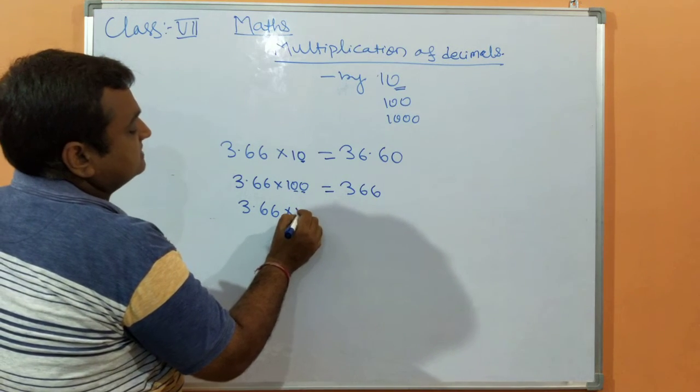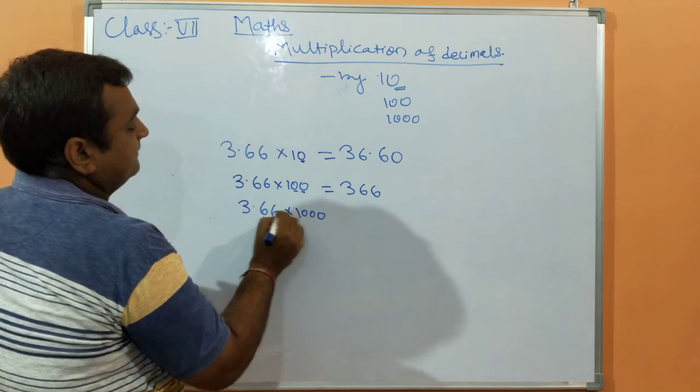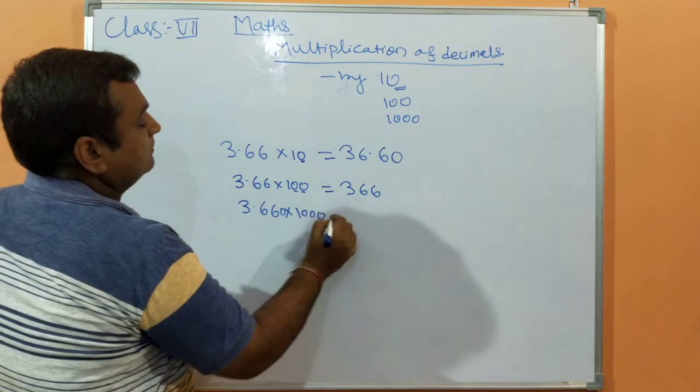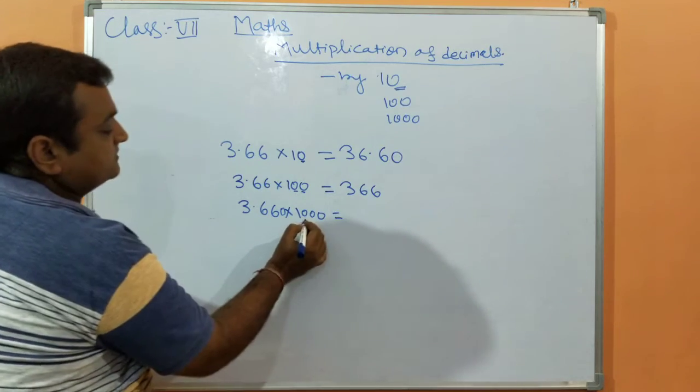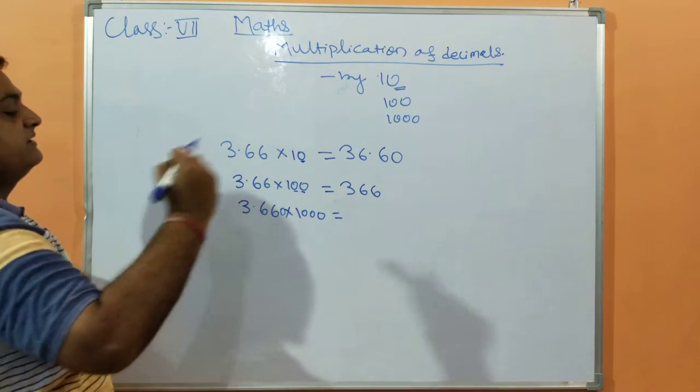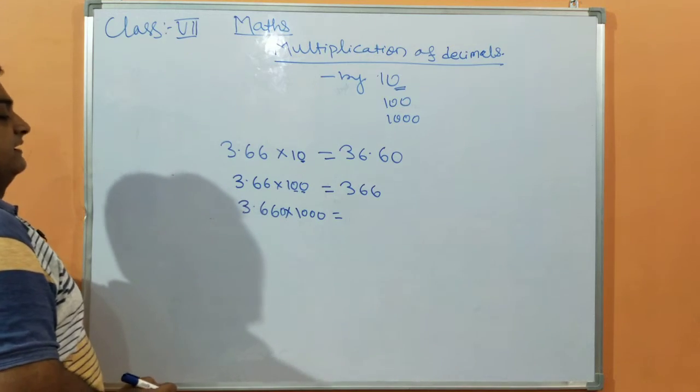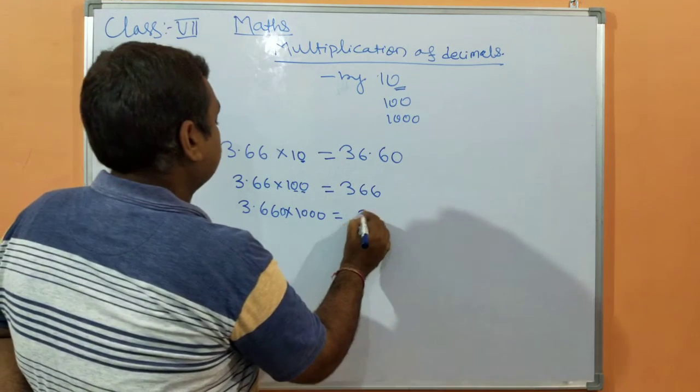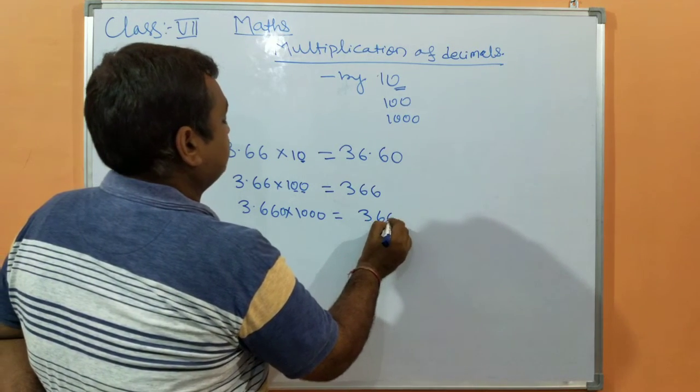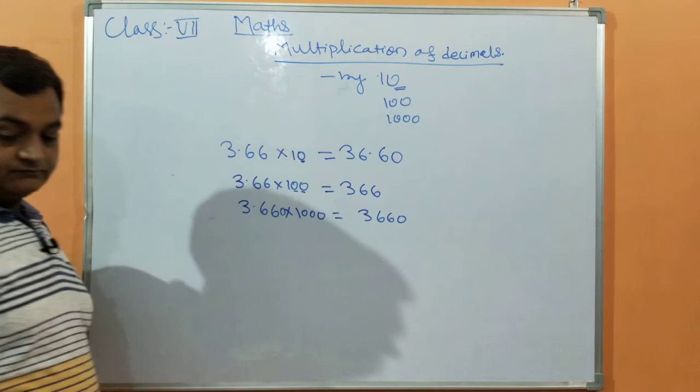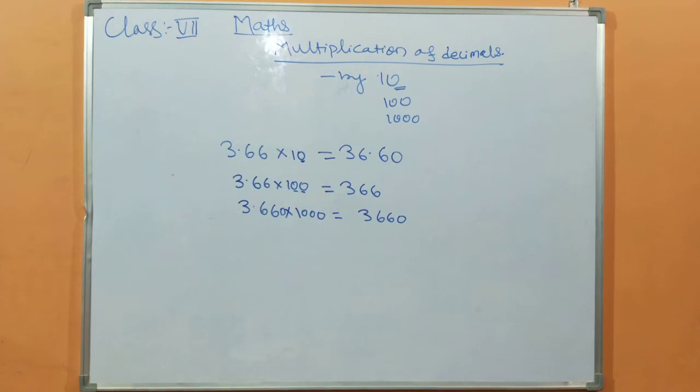Similarly, if we multiply this same number by 1000, the number of zeros is 3, so the decimal position will shift 3 digits. The answer is 3660.